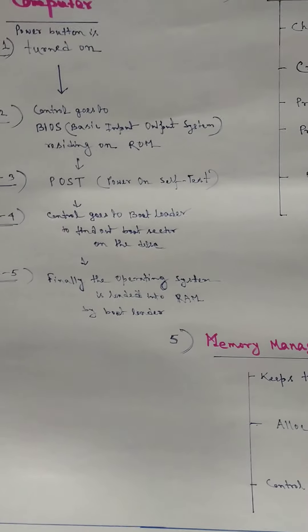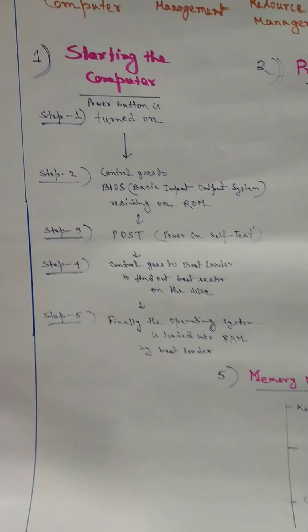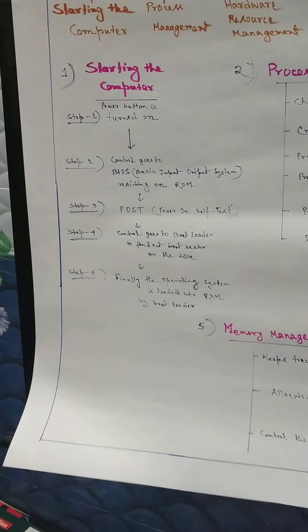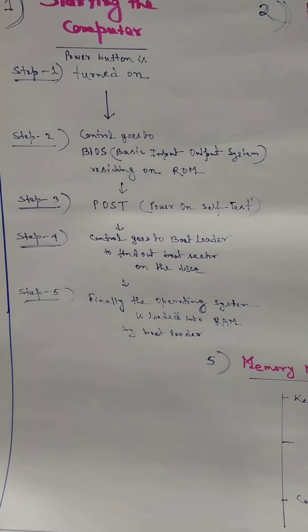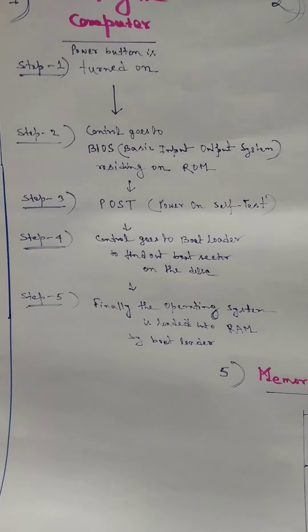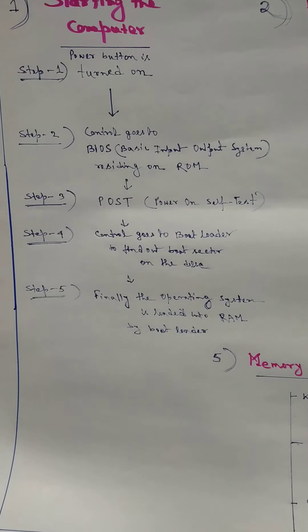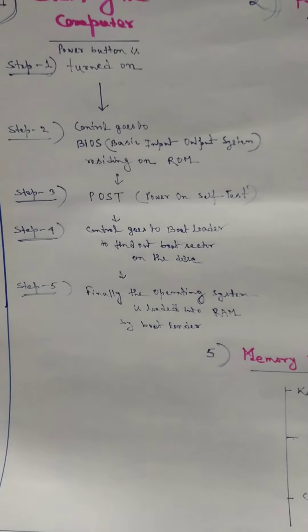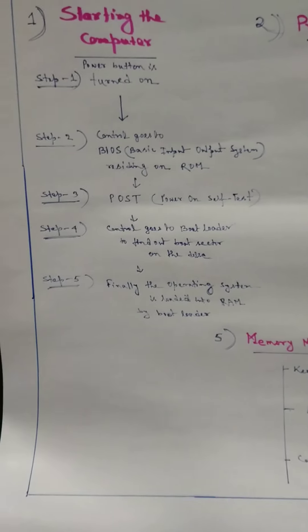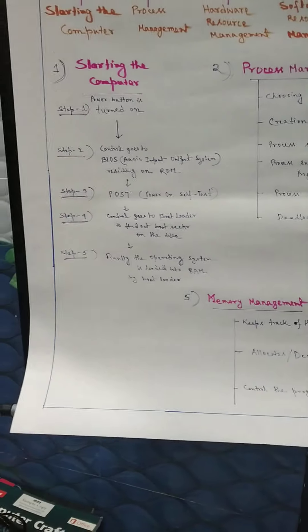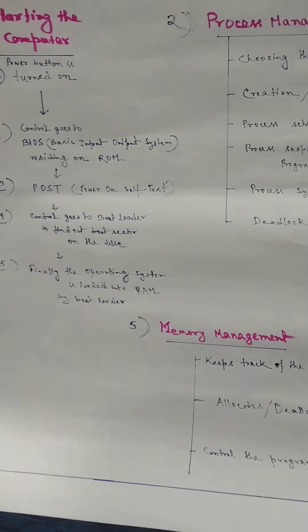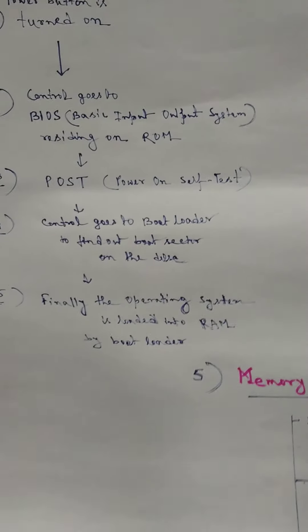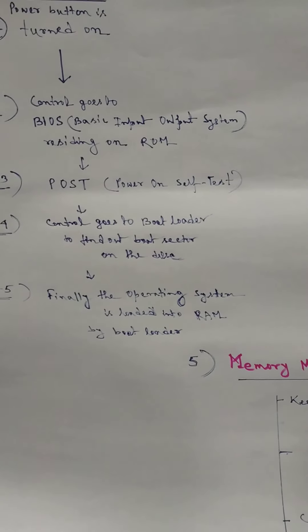So, starting the computer — how operating system helps in starting the computer — it follows five steps. First, you turn on the power button. Then control goes to BIOS, whose full form is basic input output system, residing on ROM — read only memory. BIOS performs POST — power on self test — checking whether all input and output devices are okay and working properly. Then BIOS sends the control to the bootloader.